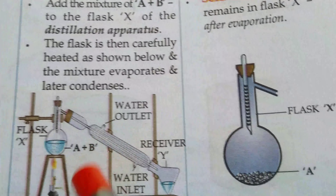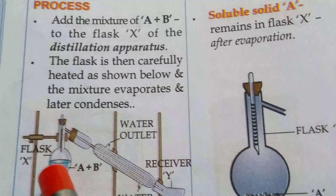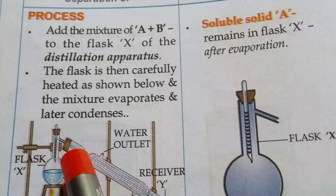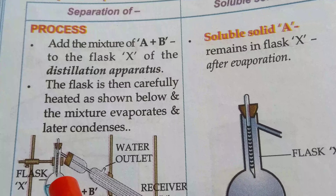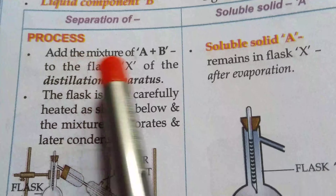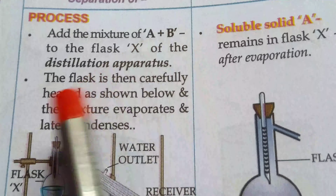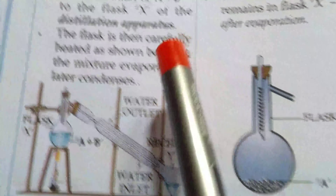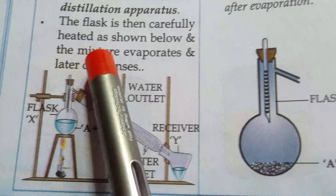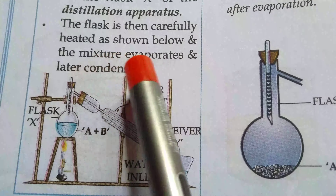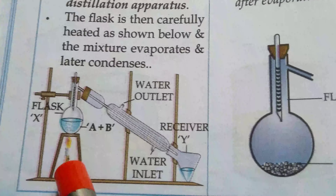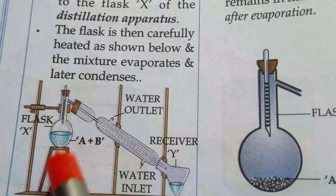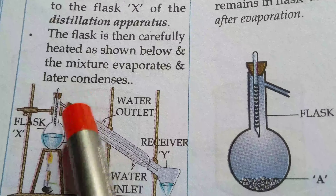This apparatus is also known as the distillation apparatus. It consists of a long conical flask and a round bottom conical flask. Add the mixture A and B to the flask X of the distillation apparatus. The flask is then carefully heated and the mixture evaporates, and later condenses.